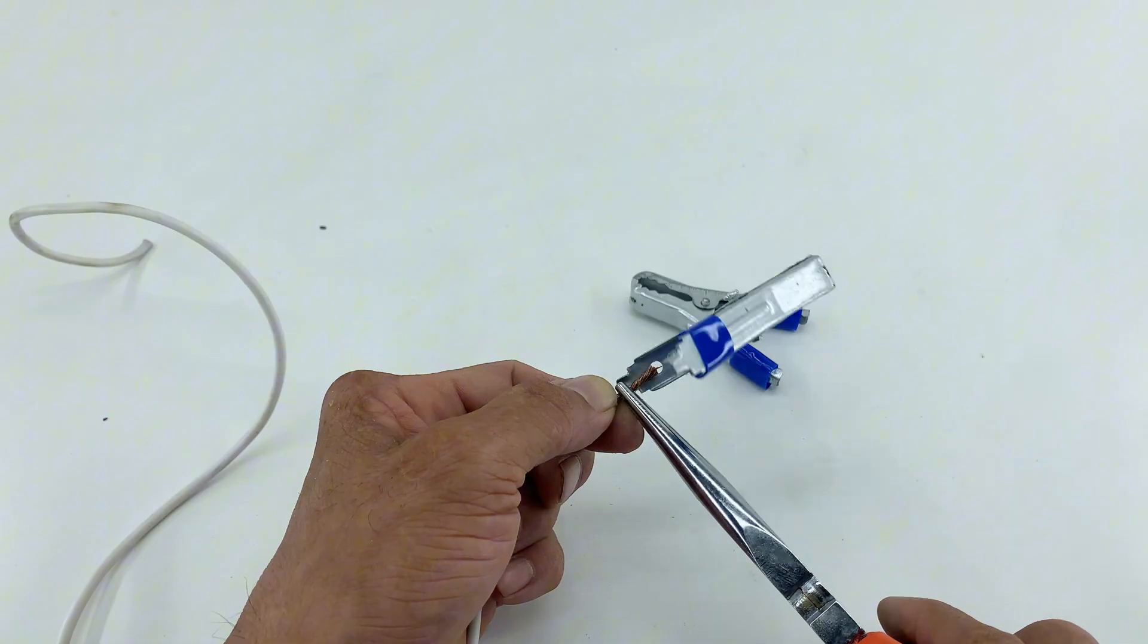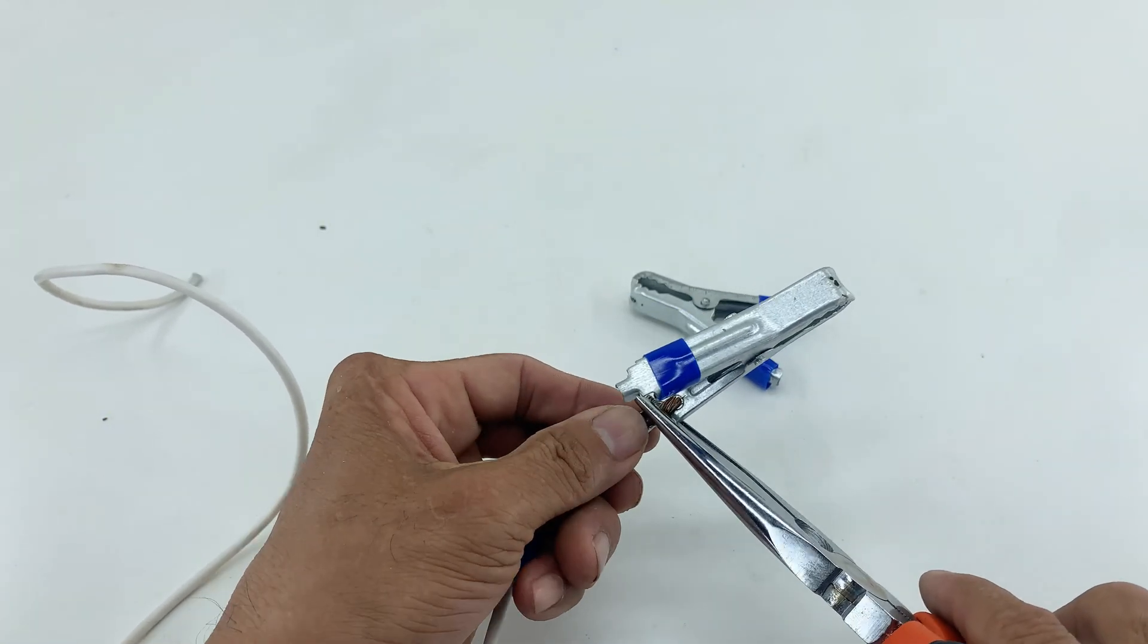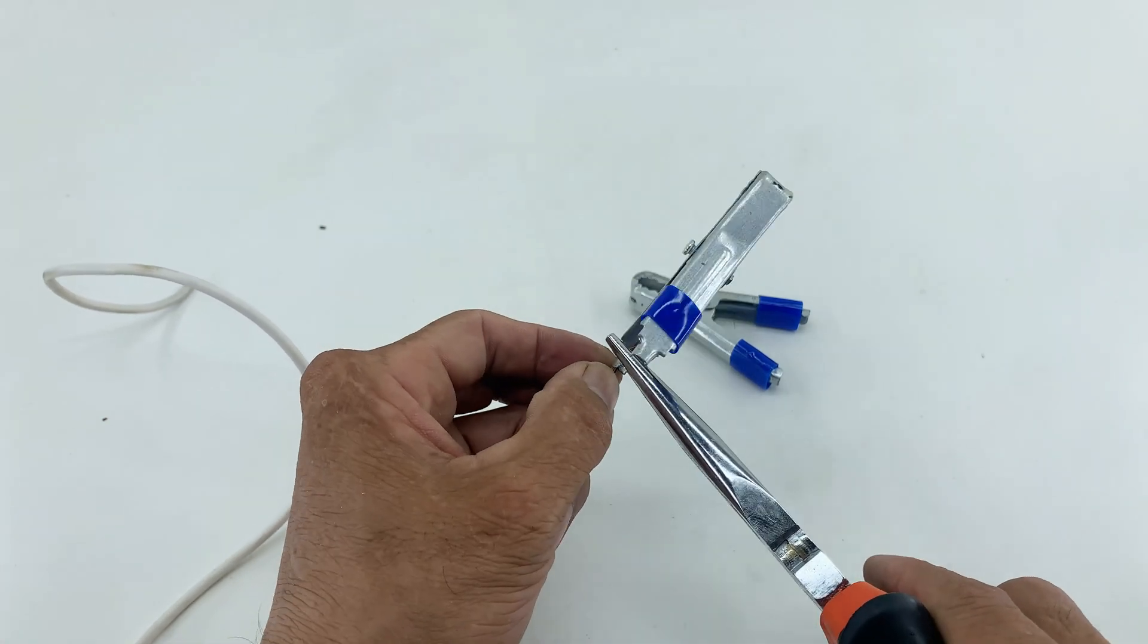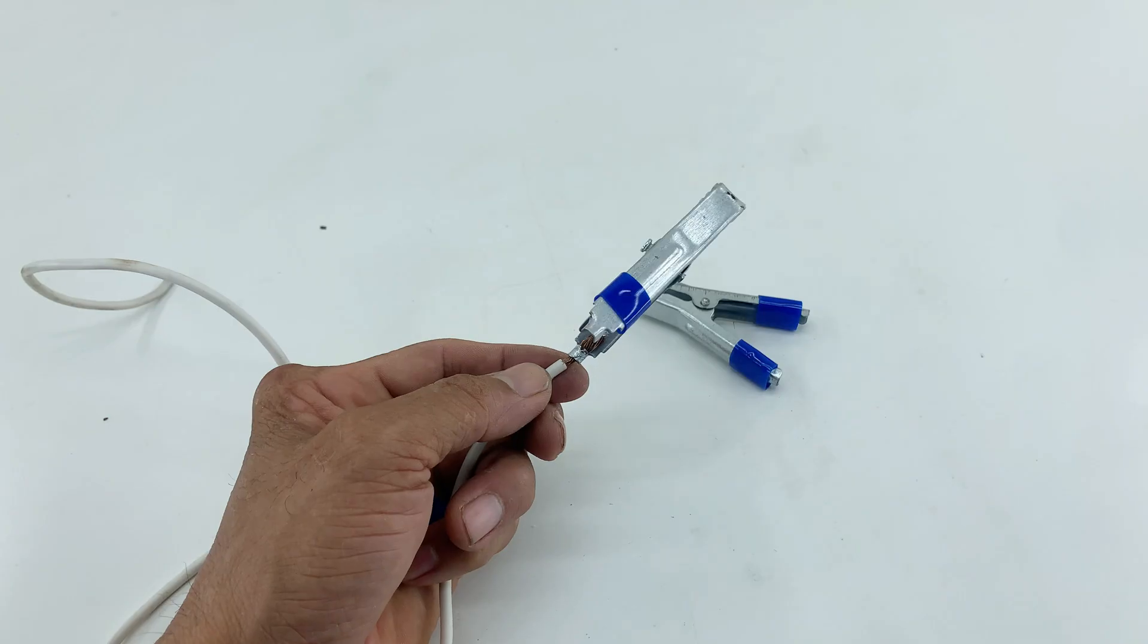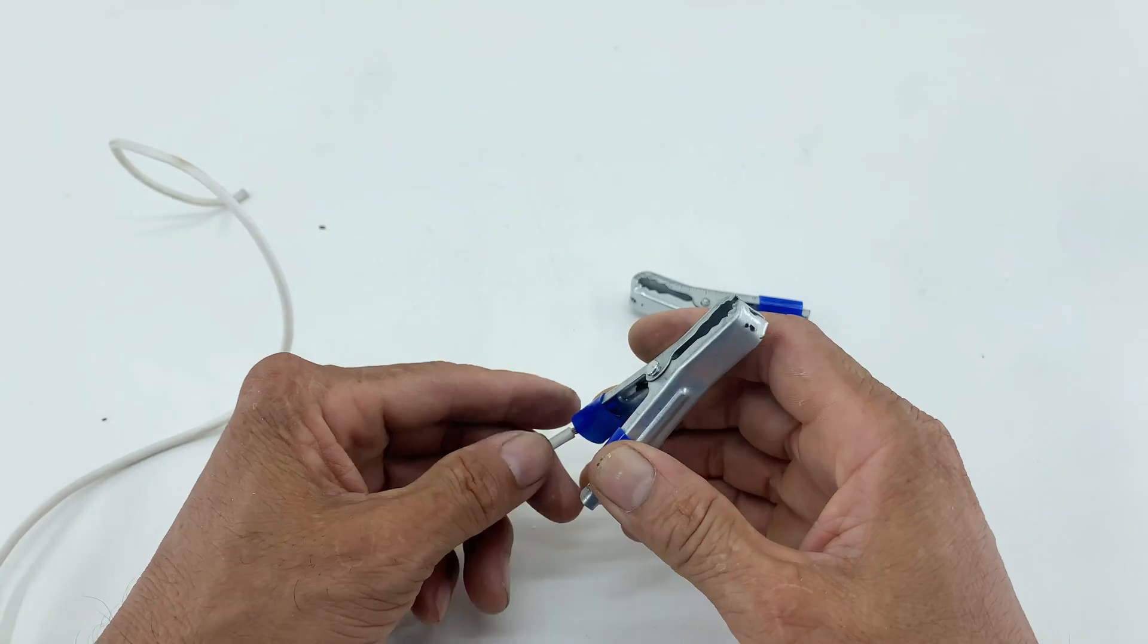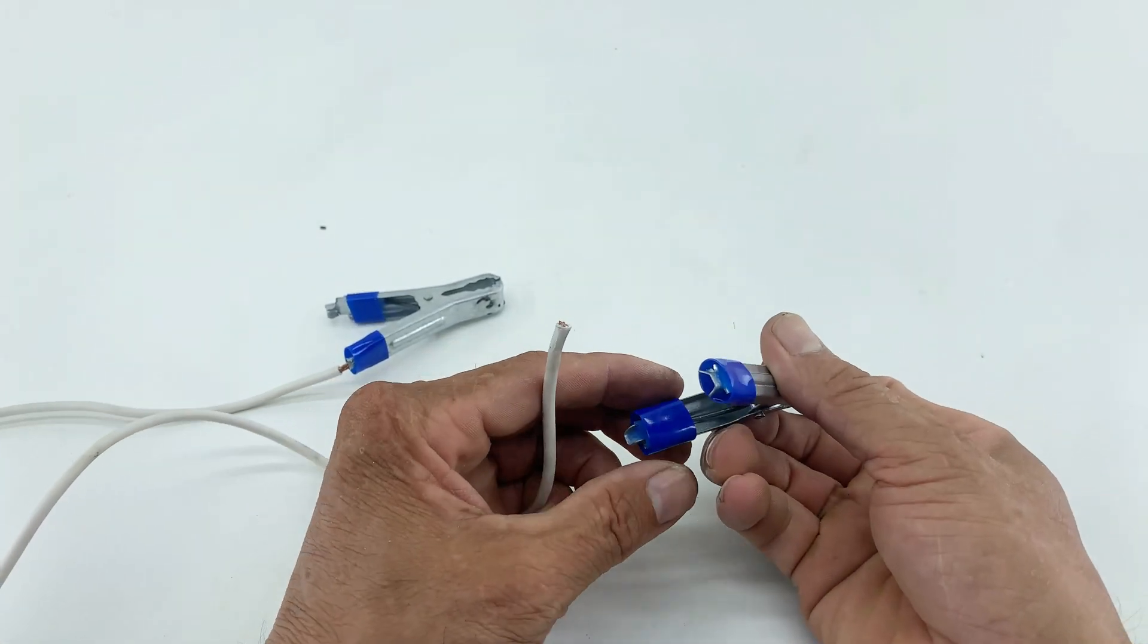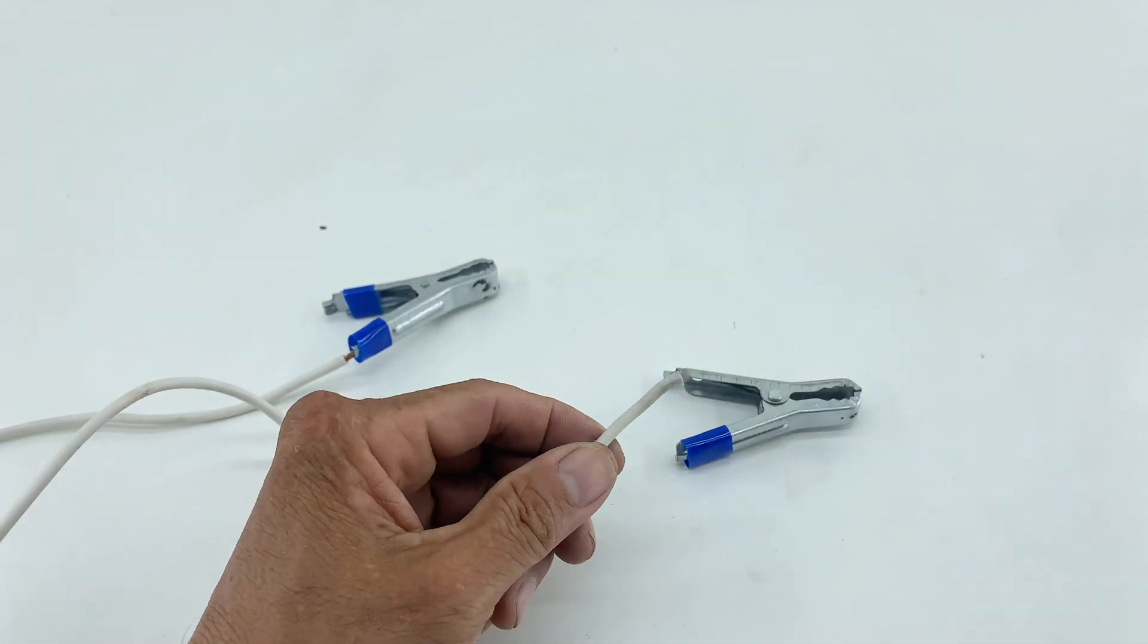I'll use my pliers to secure the connection firmly. The rubber insulation covers help protect the connections and indicate polarity when using the tool. I repeated the same process to attach an alligator clip to the other end of the wire.